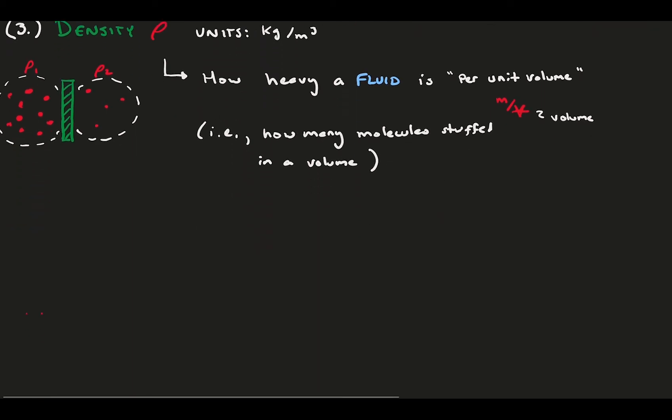The last static fluid property, meaning the property of a fluid even if it's not moving, is temperature, represented by T, or sometimes theta, and is technically dimensionless but represented by Kelvin or Celsius.